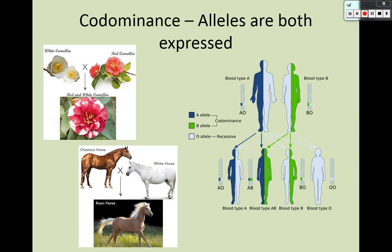Where we see codominance in humans is in blood types. If someone has type A blood and someone has type B blood, they can have a child who is AB — having the A allele and the B allele. There are actually three alleles: the A allele and the B allele are codominant, and the O allele is recessive, meaning the only way to get type O blood is if you have two O alleles. You can set up a Punnett square to show this — four offspring possibilities: A, O, B, and O alleles combining.